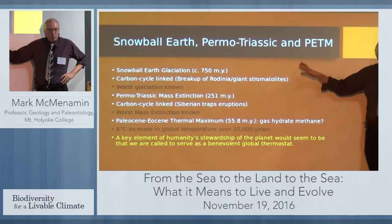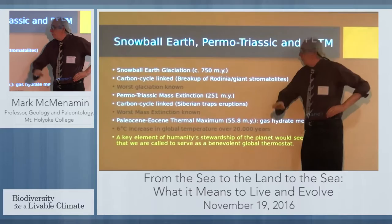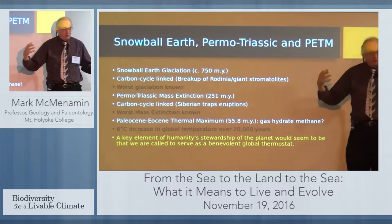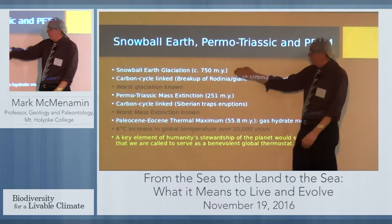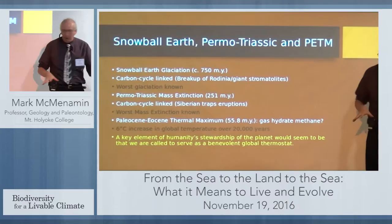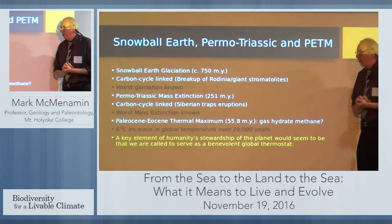Here are a couple of key points in Earth history. We have the Snowball Earth glaciation at about 750 million years ago — it seems to be carbon cycle linked, apparently linked with the breakup of the supercontinent Rodinia and giant stromatolites, which sequester a lot of carbon in their carbonate structure. As Paul Hoffman at Harvard has argued, the Snowball Earth glaciation is probably driven by these tectonic and biological factors, leading to the worst glaciation known in all of Earth history. Some estimates suggest the planet was completely frozen over with a thick ice sheet over almost all of the oceans.